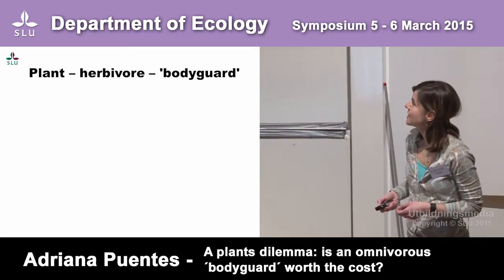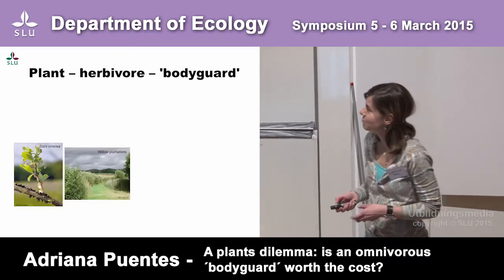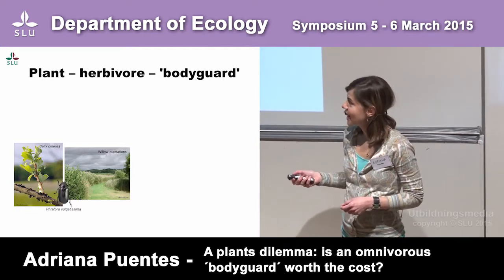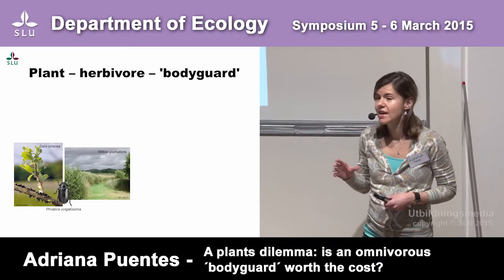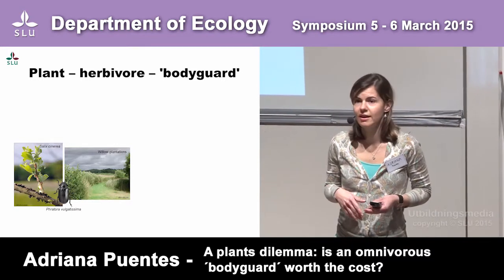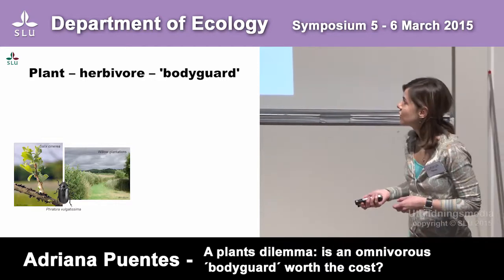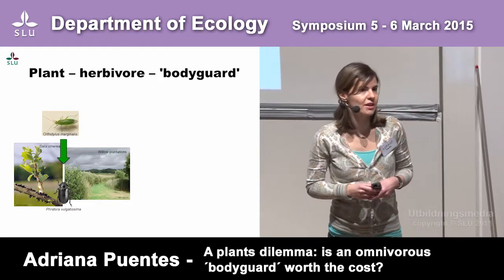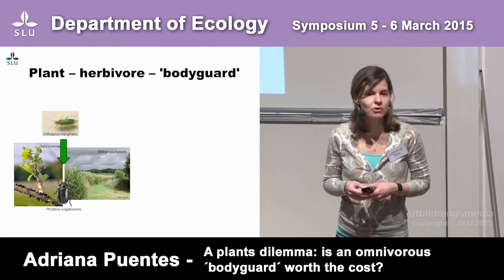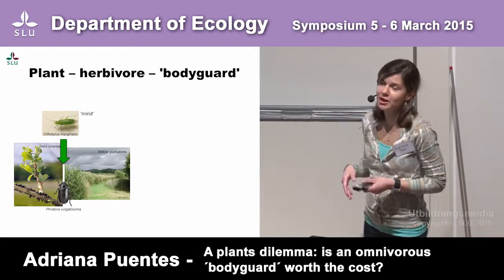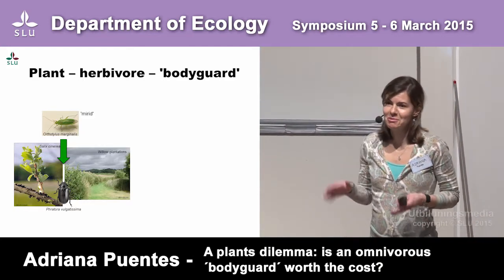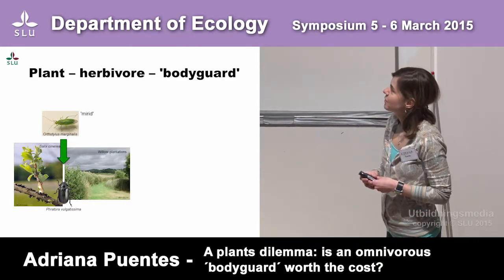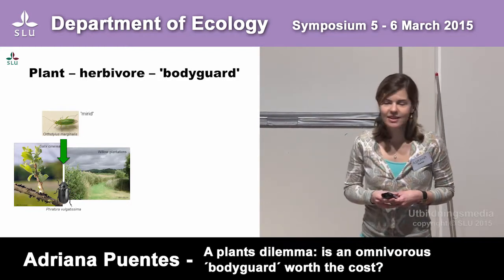Today I'm here to tell you about a dilemma that plants in the Salix genotype face. These plants are ferociously attacked by the leaf beetle Phratora vulgatissima, which reduces plant fitness through reducing plant growth. In turn, this beetle is fed upon by the omnivore Orthotylus marginalis, which belongs to the family Miridae — I'm just going to call it the myrid. This myrid feeds upon the larvae and eggs of this beetle.